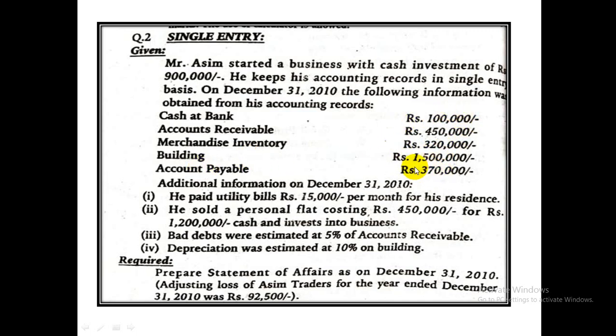Accounts payable is the only liability at the year end. So if we want to calculate capital at end, we will add all the assets and we will subtract this liability.